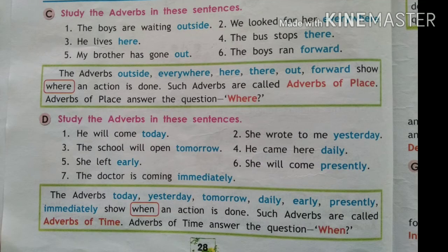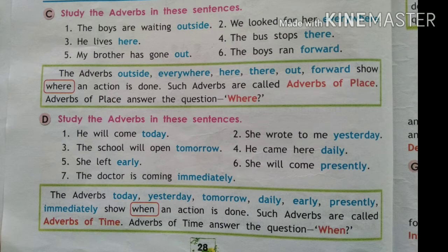Now let's study adverbs of place. The sentences are: the boys are waiting outside; we looked for her everywhere; he lives here; the bus stops there; my brother has gone out; the boys ran forward. The adverbs outside, everywhere, here, there, out, and forward show where an action is done. Such adverbs are called adverbs of place. They answer the question 'where?'.